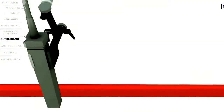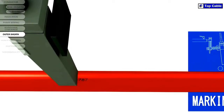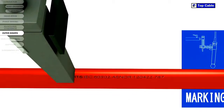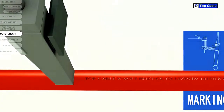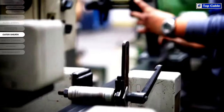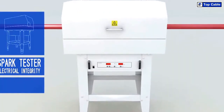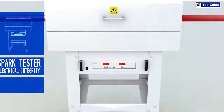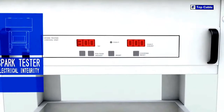So that all Top Cable customers can correctly identify their cables, the cables are marked with the most important information: manufacturer, trade name, cable name, number of conductors, cross section, construction regulation and standards, CE marking, and other information of interest such as the product's certification. There is also a meter-by-meter mark on the cable to help customers with their stock control.